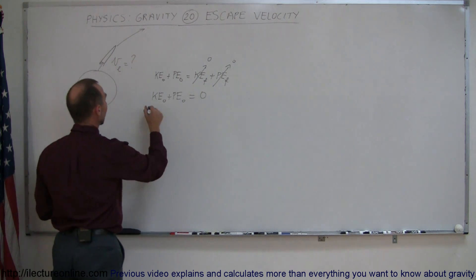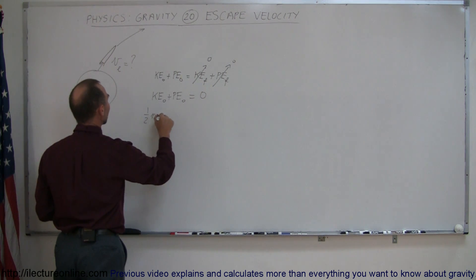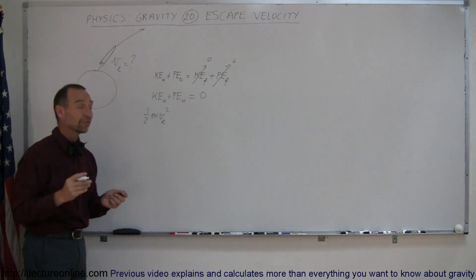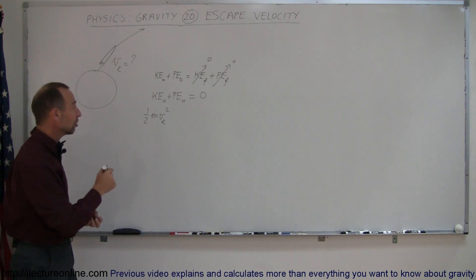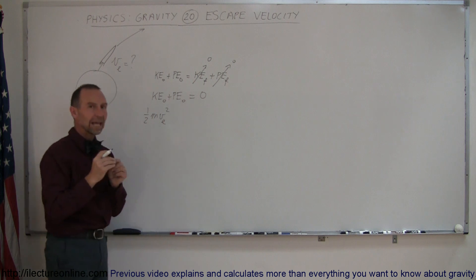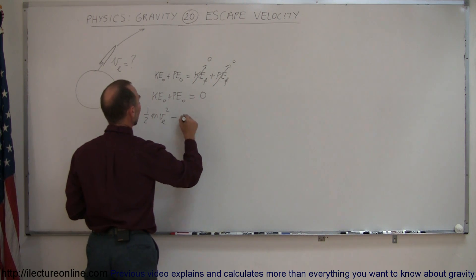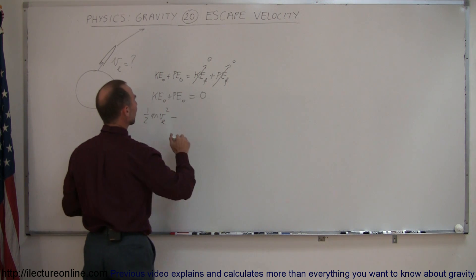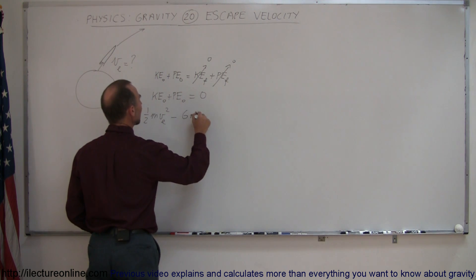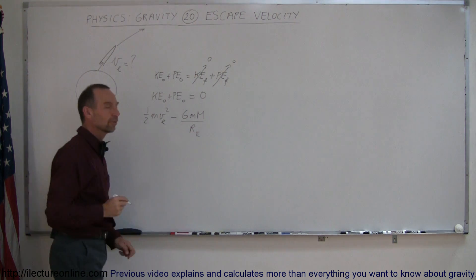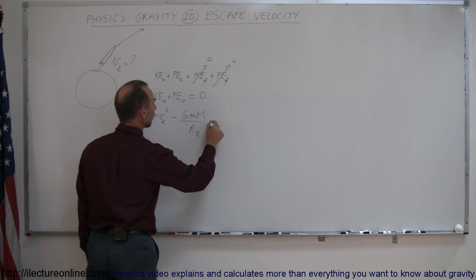Of course, the kinetic energy initial will have to be one-half mv squared. And the velocity required is escape velocity, so we'll write v sub e. And the potential energy initial will be the potential energy it has at the Earth's surface. So it would be minus GMm over R, and that of course would be the radius of the Earth. And that has to equal zero.